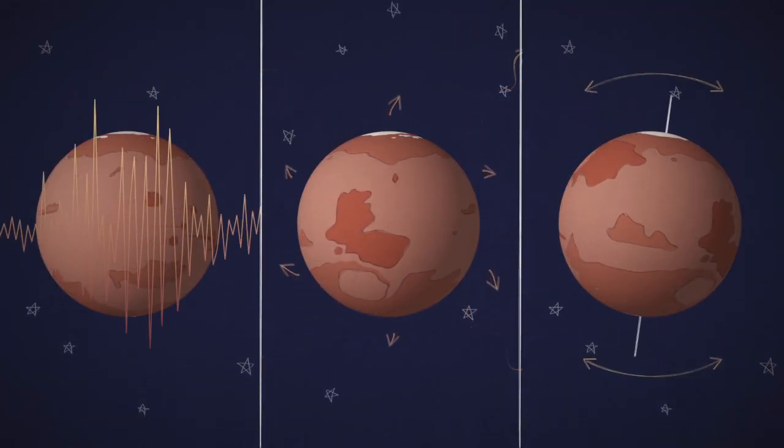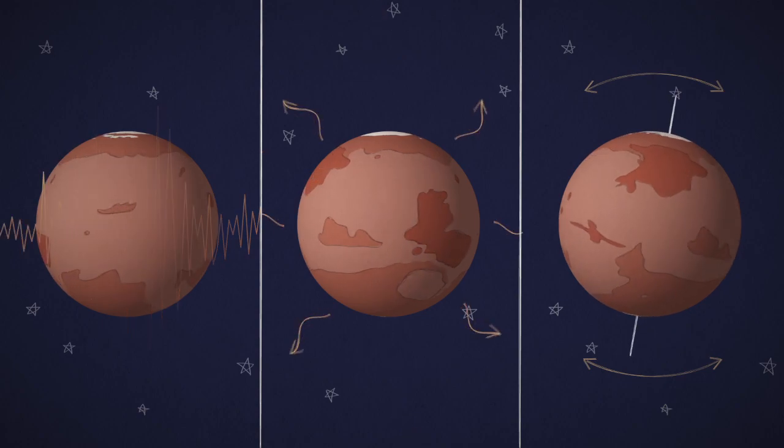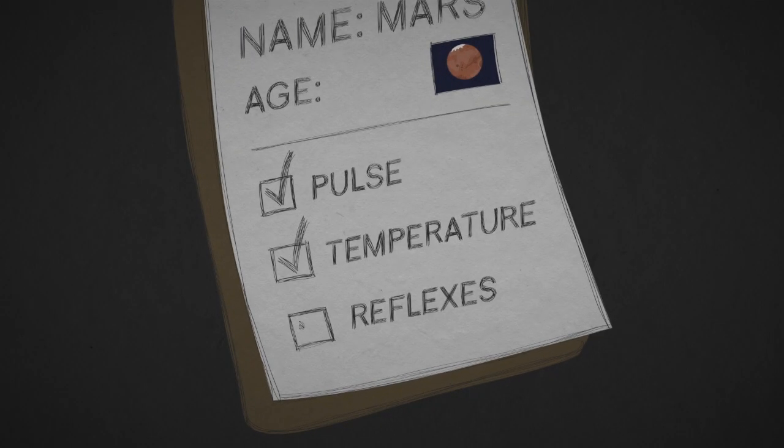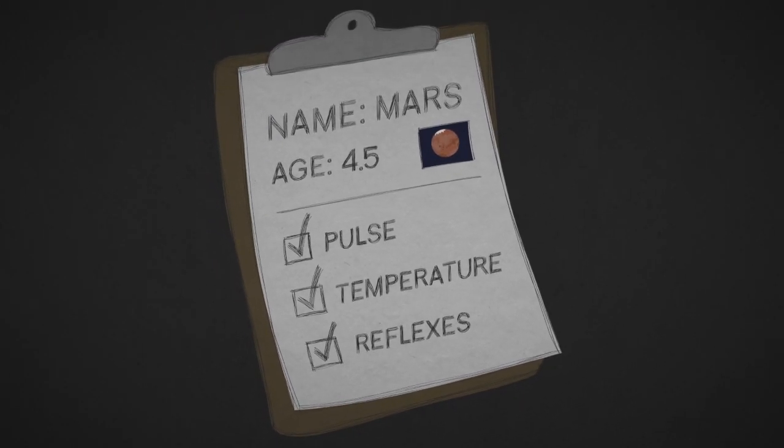These all provide clues to what the planet is really like inside. So what's inside Mars? InSight can help us find out by giving Mars its first thorough check-up since it formed 4.5 billion years ago.